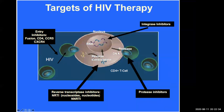These drugs that are called reverse transcriptase inhibitors include nucleoside reverse transcriptase inhibitors — like tenofovir, lamivudine, abacavir — and non-nucleoside reverse transcriptase inhibitors like efavirenz and nevirapine. These are what we call drug classes.